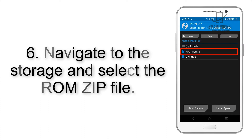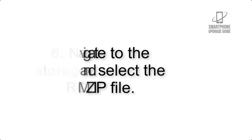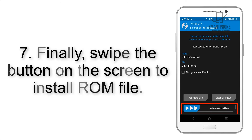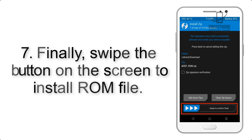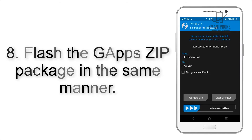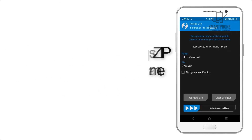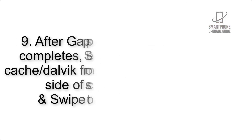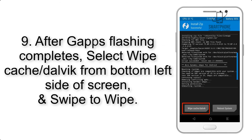Step 5: Go back to the recovery main screen and tap on the Install button. Step 6: Navigate to the storage and select the ROM zip file. Step 7: Finally, swipe the button on the screen to install the ROM file. Step 8: Flash the GApps zip package in the same manner.